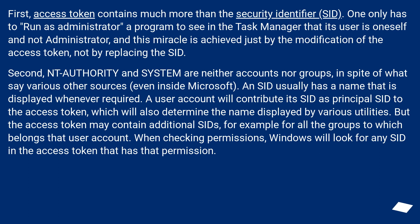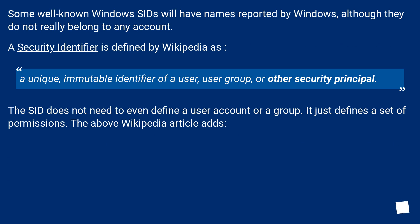When checking permissions, Windows will look for any SID in the access token that has that permission. Some well-known Windows SIDs will have names reported by Windows, although they do not really belong to any account. A security identifier is defined by Wikipedia as a unique, immutable identifier of a user, user group, or other security principal. The SID does not need to define a user account or a group — it just defines a set of permissions.